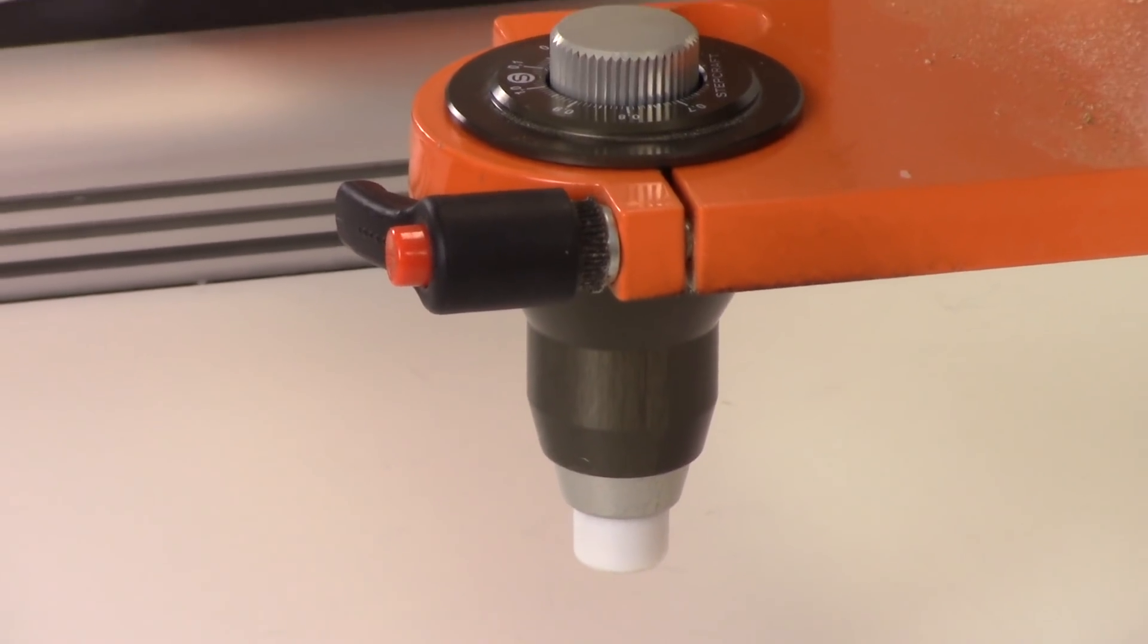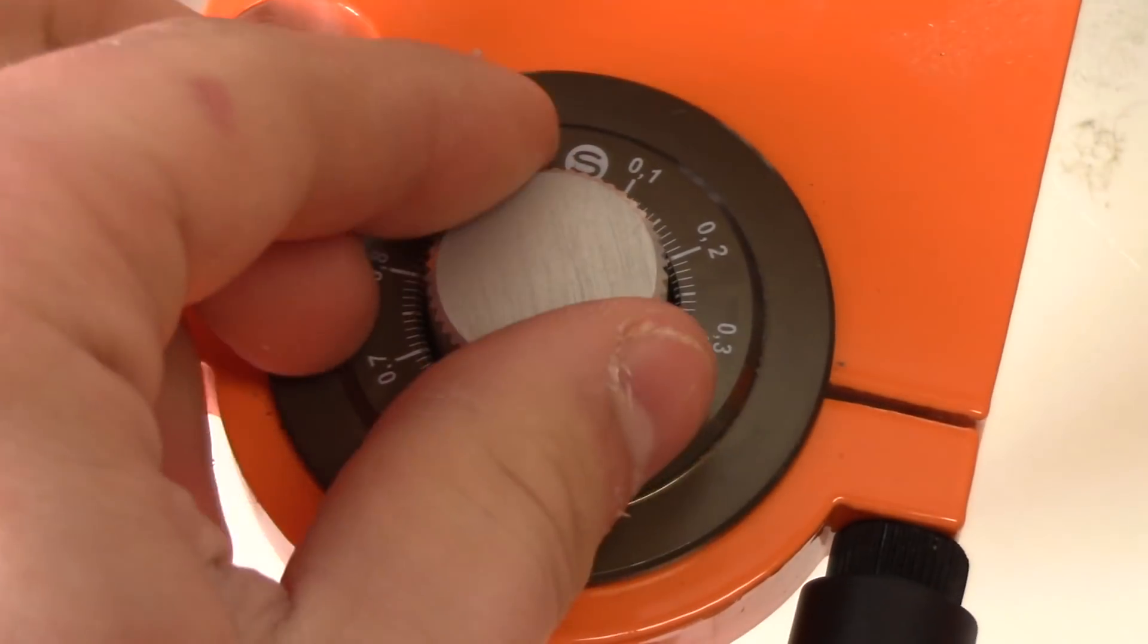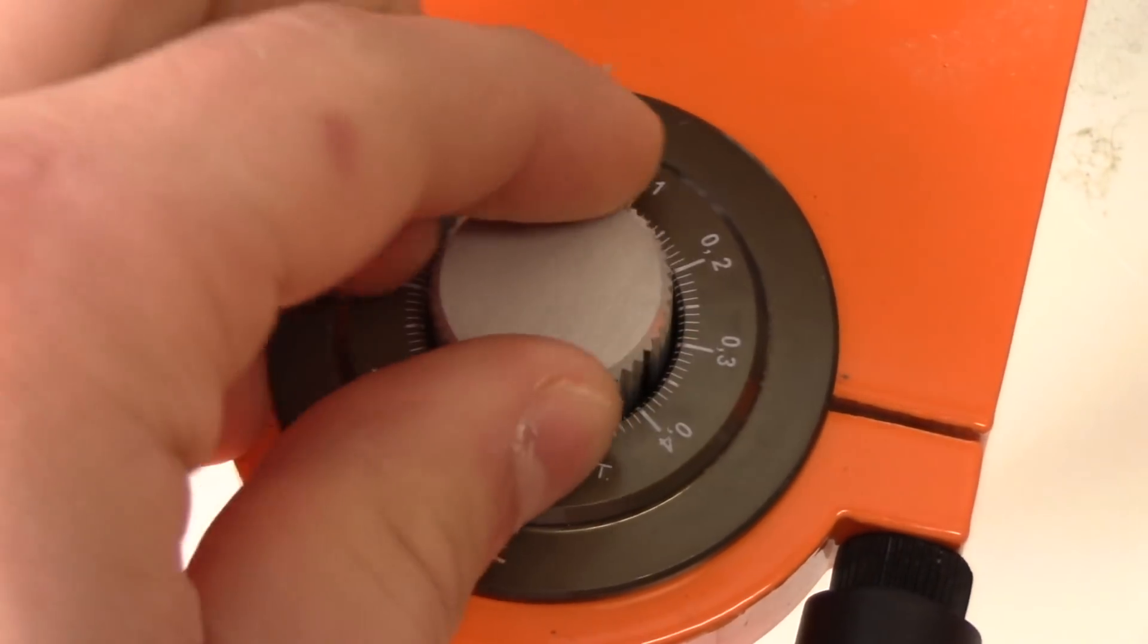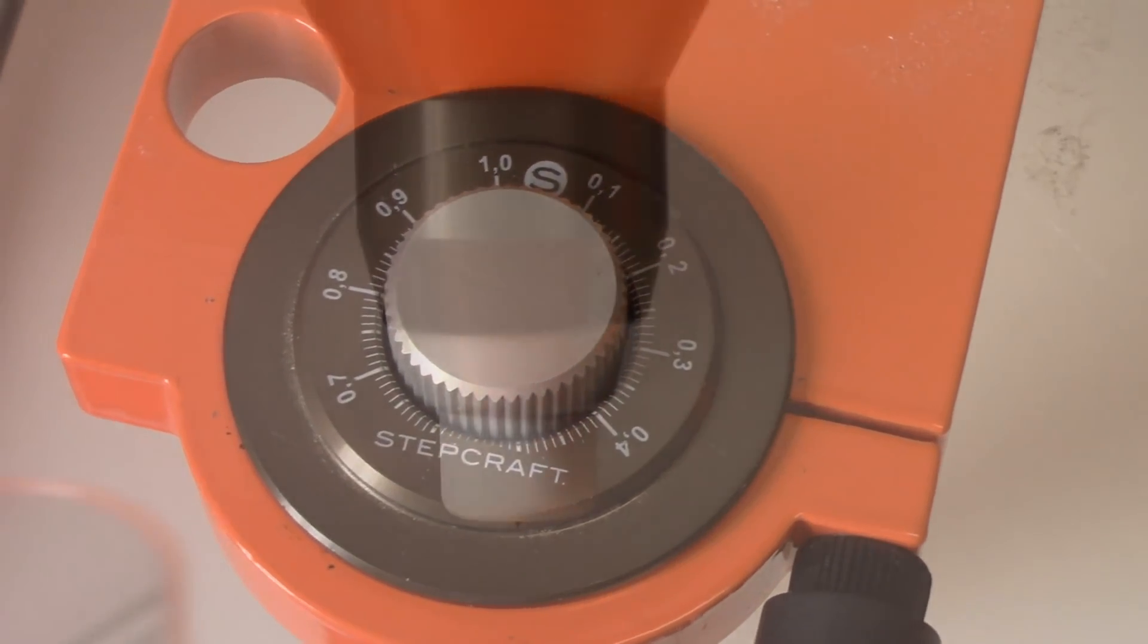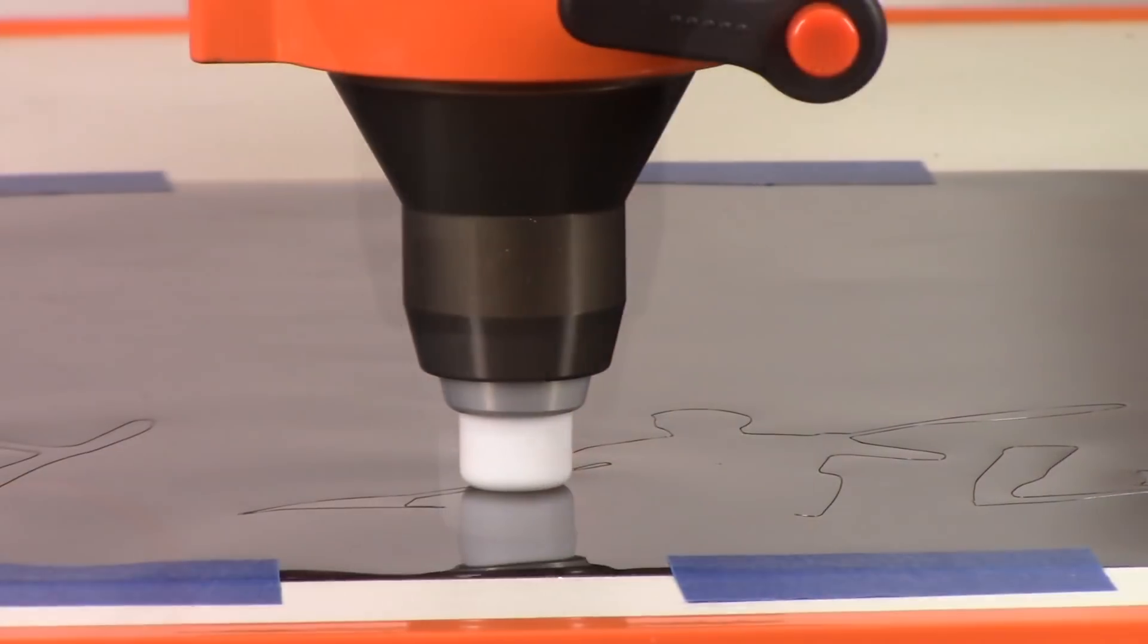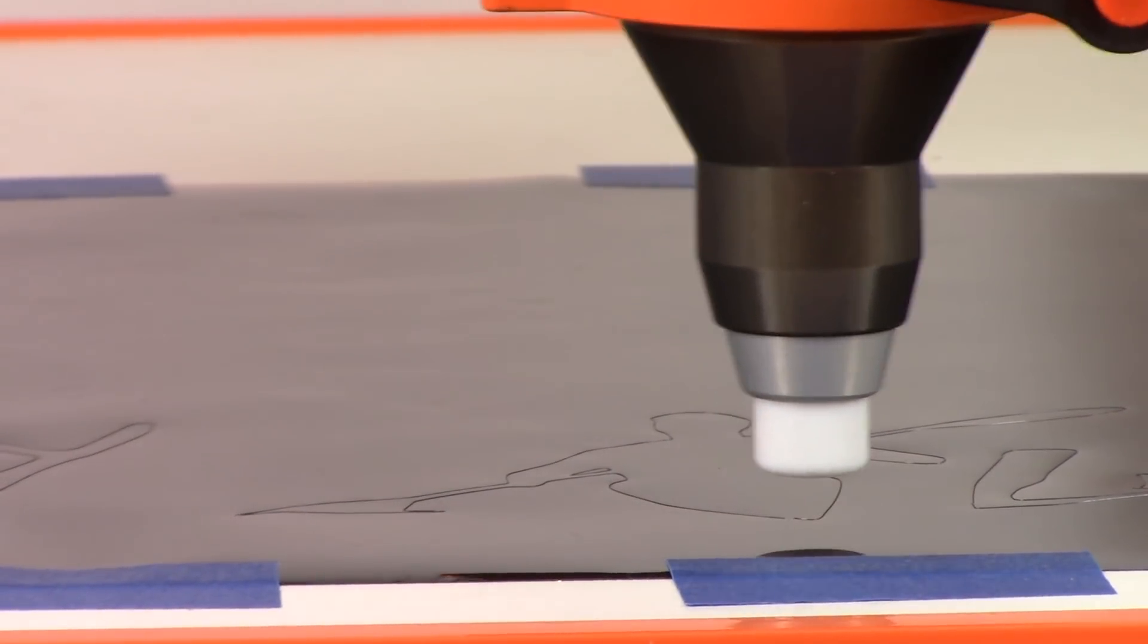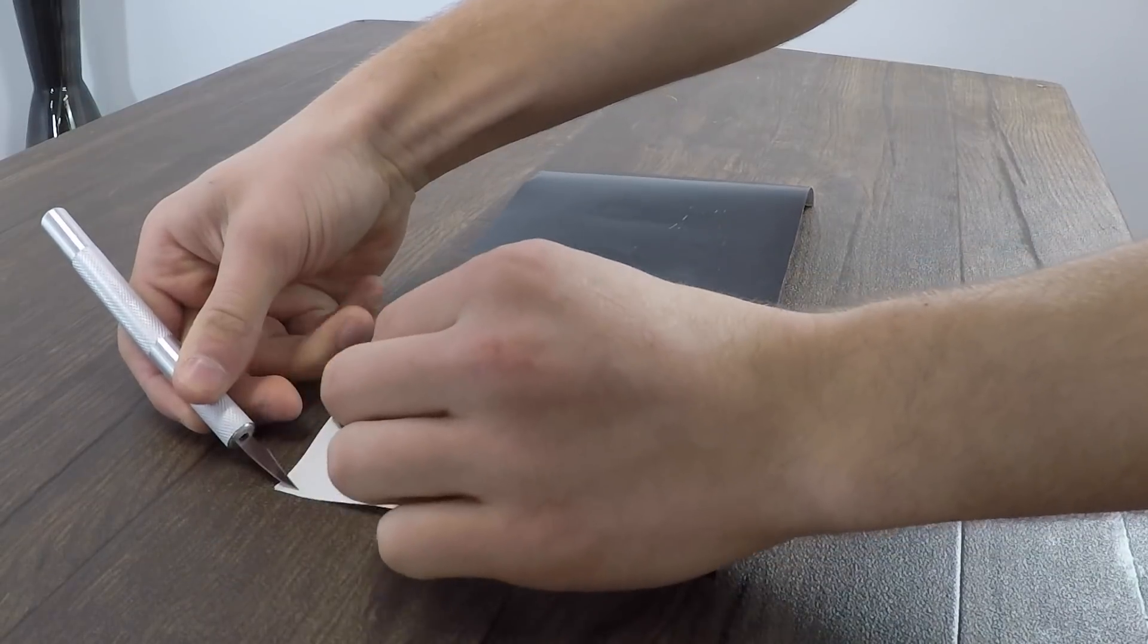Another unique feature of the stepcraft drag knife is a fully adjustable blade depth. By turning the knob at the top of the unit you can adjust the amount of blade that is exposed from the bottom of the unit, thus controlling how deep the blade cuts into the material. This is especially important with material like vinyl where you might only want to cut through the vinyl itself and not through the backing paper.